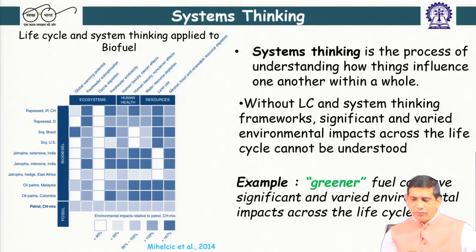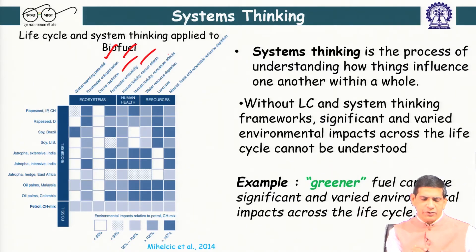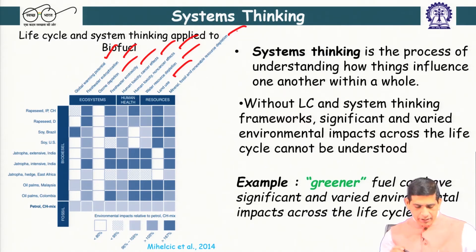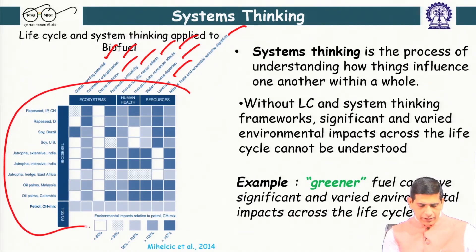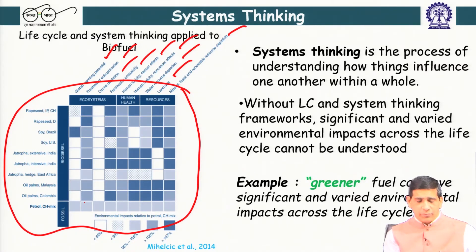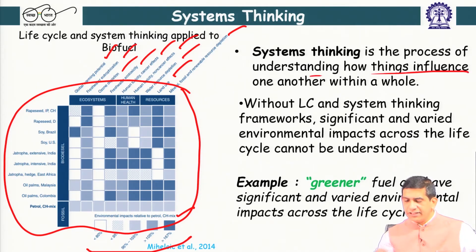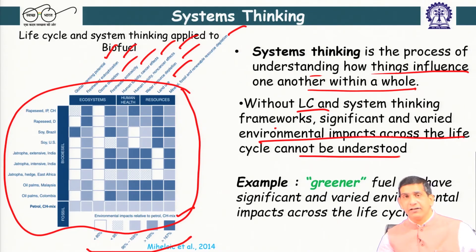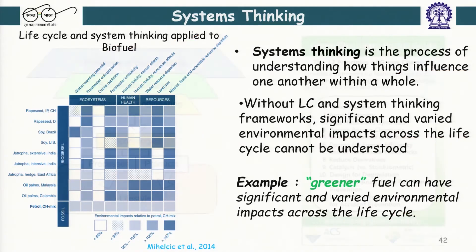Applying life cycle and systems thinking to biofuel, we look at different impact categories: global warming, fresh water, ozone depletion, freshwater ecotoxicity, cancer effects, human toxicity, water resource, land use impact, minerals, and fossil fuels. You can see a matrix of different types of impact for different feeds, showing environmental impacts relative to petrol. Systems thinking is the process of understanding how things influence one another within a whole system — without life cycle and systems thinking, significant and varied environmental impact across the life cycle cannot be understood.